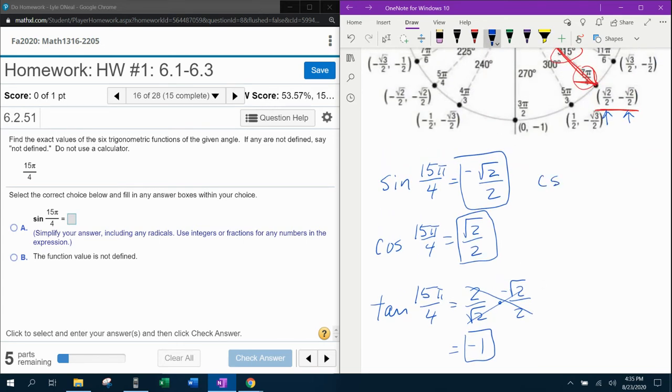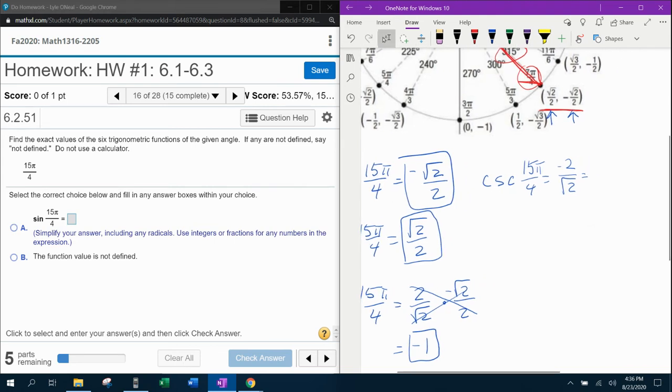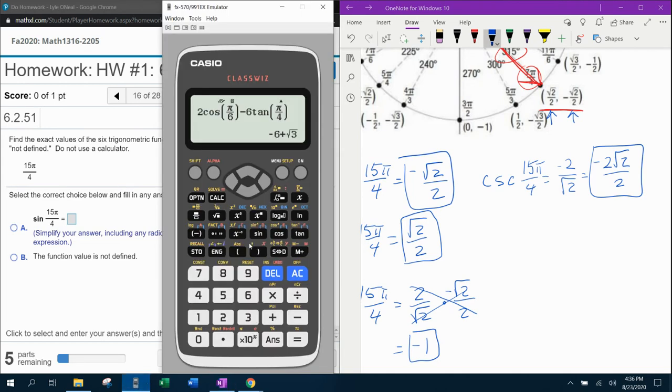And now we can get our cosecant, secant, and cotangent. So cosecant of 15π over 4 is going to be the reciprocal of sine, which is going to be negative 2 over square root of 2. And then if we rationalize that, that's going to be negative √2. So if you don't believe me, let's pull up the calculator.